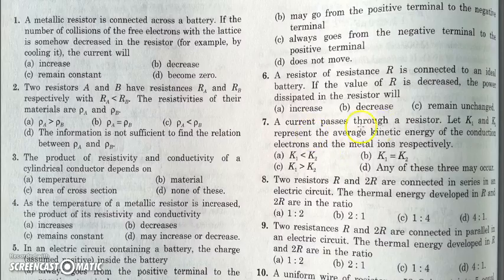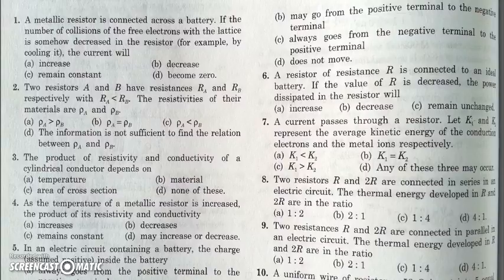In the next question, current passes through a resistance, and K1 and K2 are the average kinetic energies of conducting electrons and metal ions respectively. Obviously, the kinetic energy of conducting electrons will be very high compared to the metal ions, because the ions are almost at rest while the electrons are moving at very high speed.